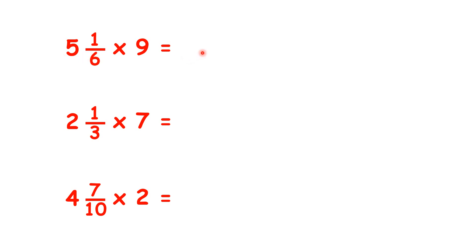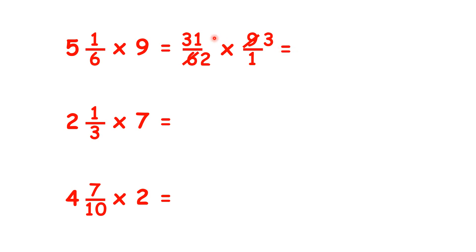Five and one sixth is the same as thirty-one over six times nine, which we can write as nine over one. Now nine and six are both in the three times table, so we can cross-simplify. And now we can multiply to get ninety-three over two. Ninety-three divided by two is forty-six, remainder one, so as a mixed number, forty-six and a half.